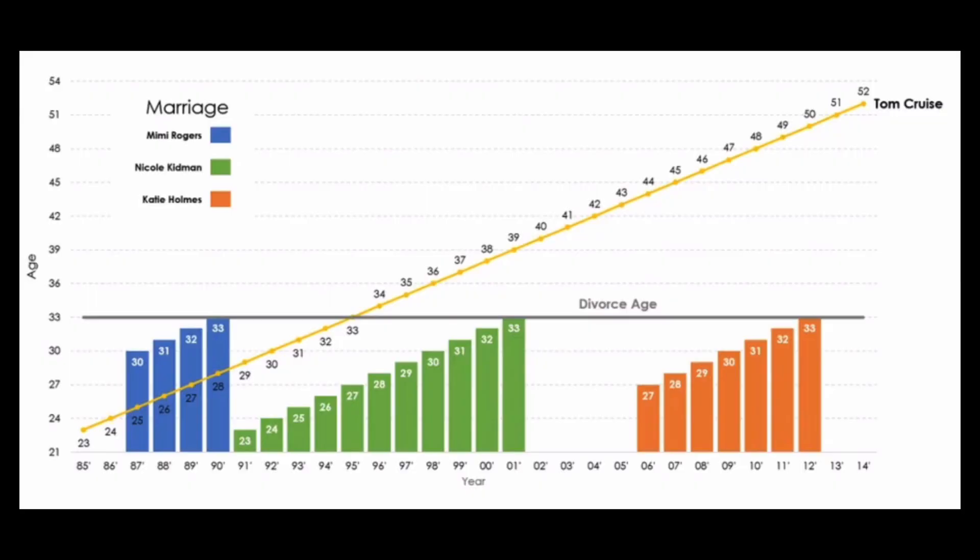This can't be true. Okay, this is a bit of a silly one. What this visualization does is plot Tom Cruise's age in the yellow line. At the bottom you can see his three wives and how old they were each year compared to him. And apparently he divorced all of them at the age of 33. Thank you for this illuminating insight, EWAT456.